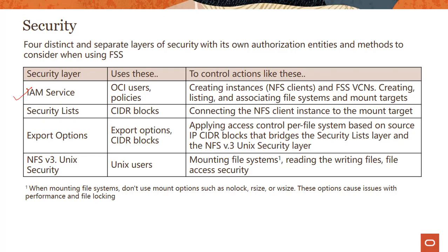Starting with the IAM service — every service in OCI allows you to leverage the identity and access management service to control actions like who can create instances, client instances, who can create the FSS VCN, and even who can create, list, and associate file systems and mount targets. All those control plane activities can be controlled by your identity service. You create your users, add them to groups, and write policies — doing authentication and authorization. If users don't have the correct permissions, they cannot create file systems, mount targets, compute instances, or virtual cloud networks.